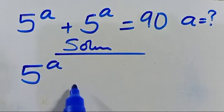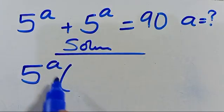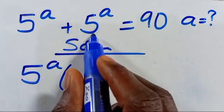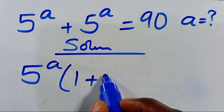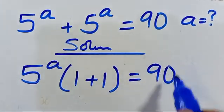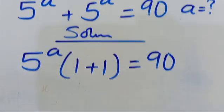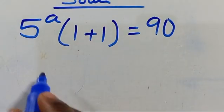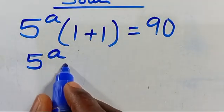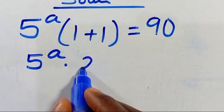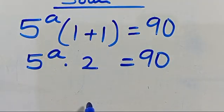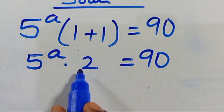We have 5 to the power of a in common, so we can factor it out. 5 to the power of a divided by itself gives us 1, plus 5 to the power of a divided by itself gives us 1. So we have 5 to the power of a multiplied by 1 plus 1, which gives us 2, equals 90.